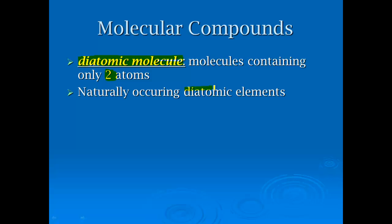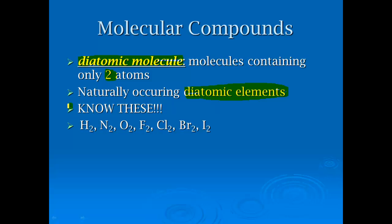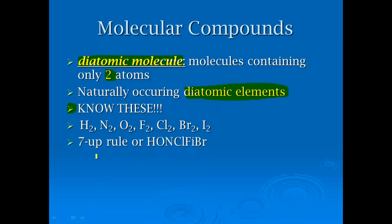There are several naturally occurring diatomic elements that you need to know — this is a memorization fact. They are hydrogen, nitrogen, oxygen, fluorine, chlorine, bromine, and iodine, which is a really unique set of elements.